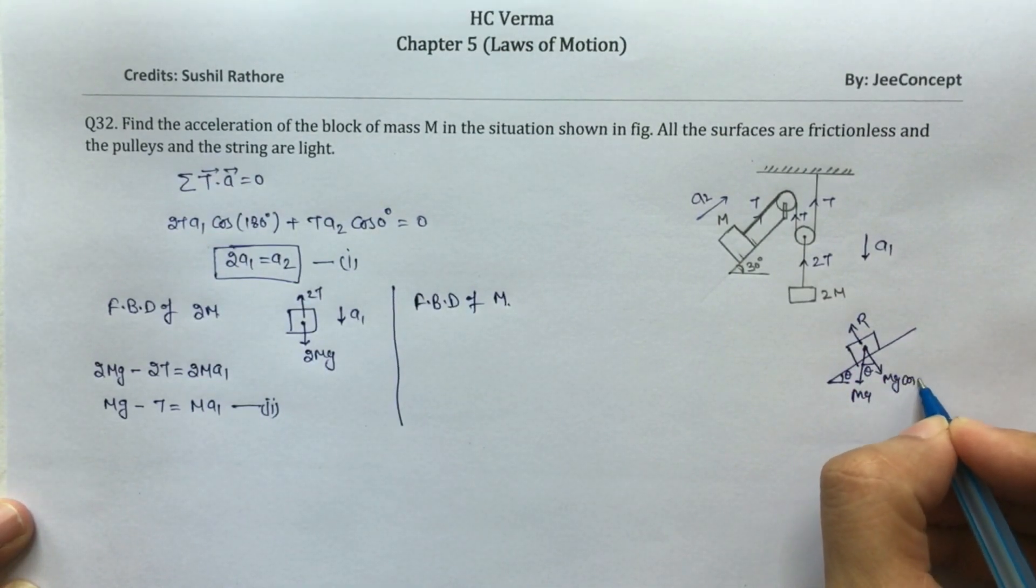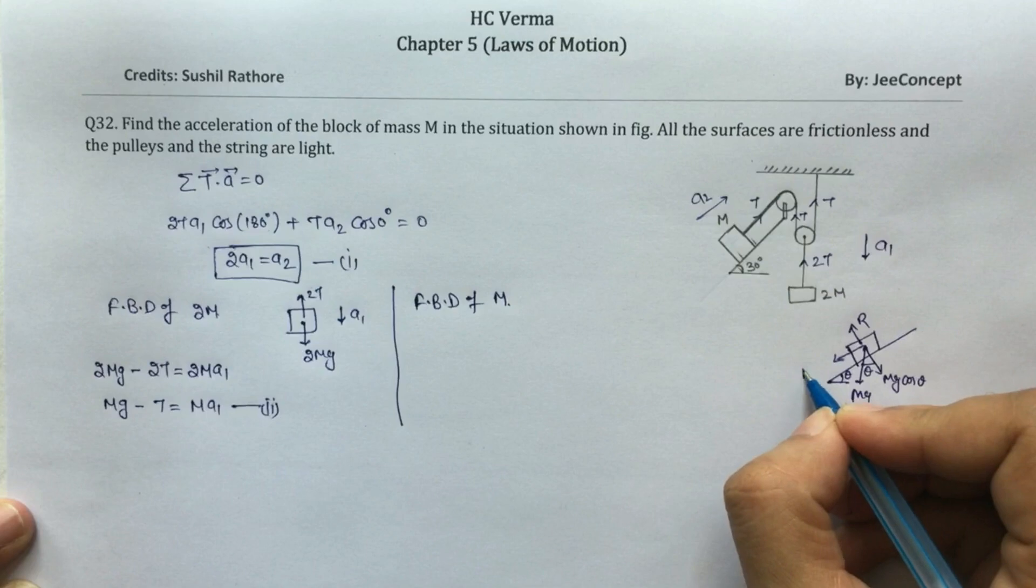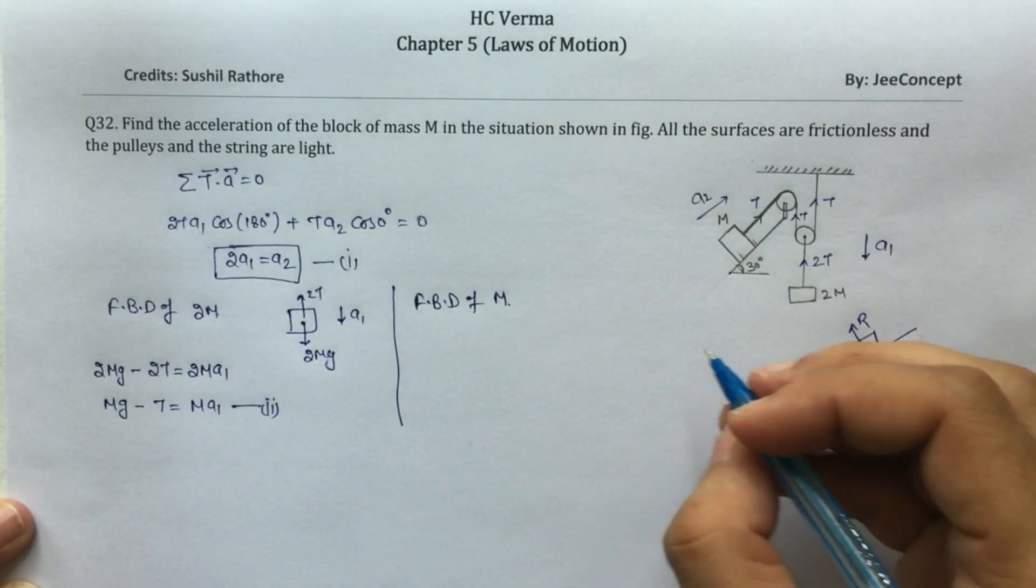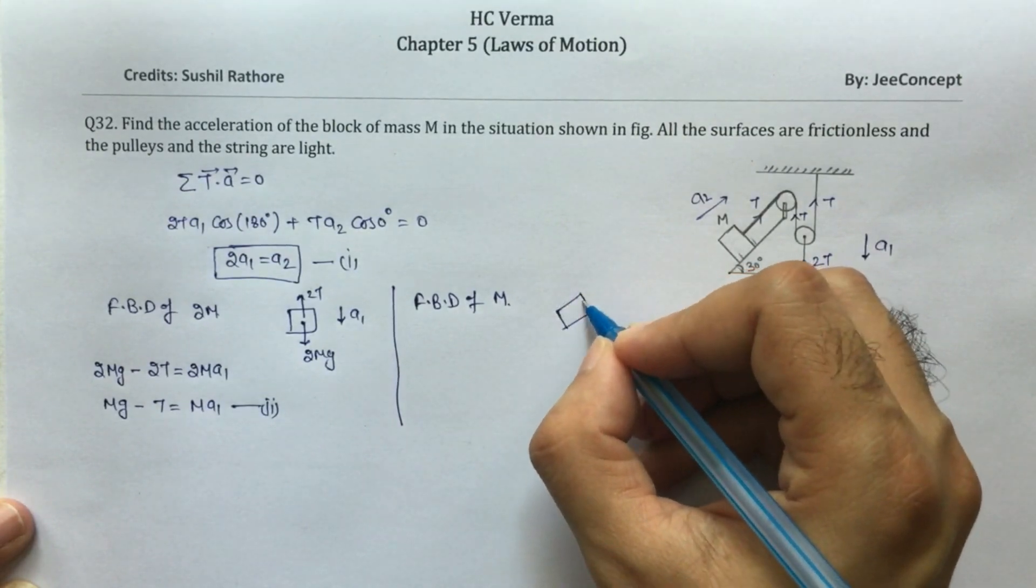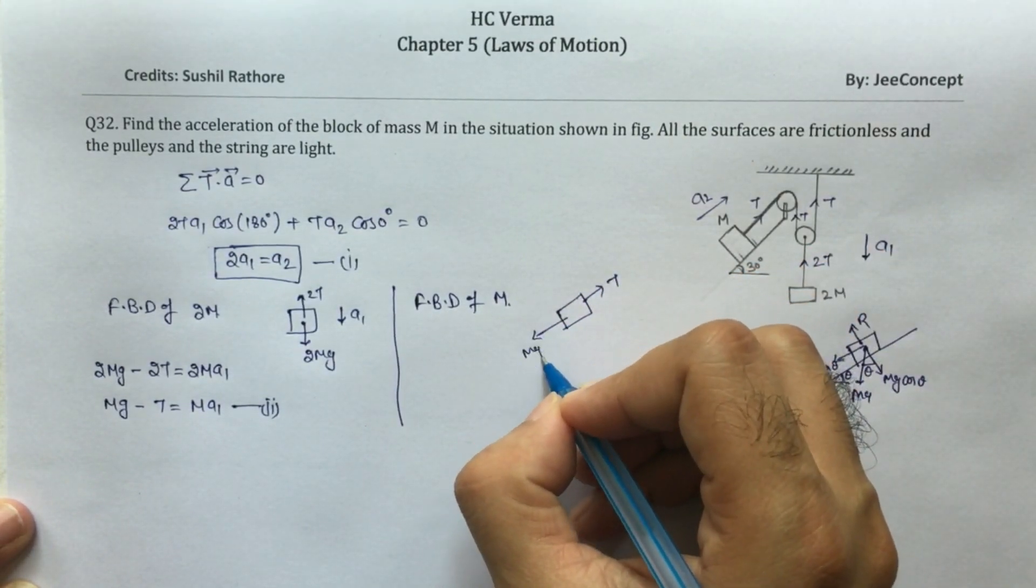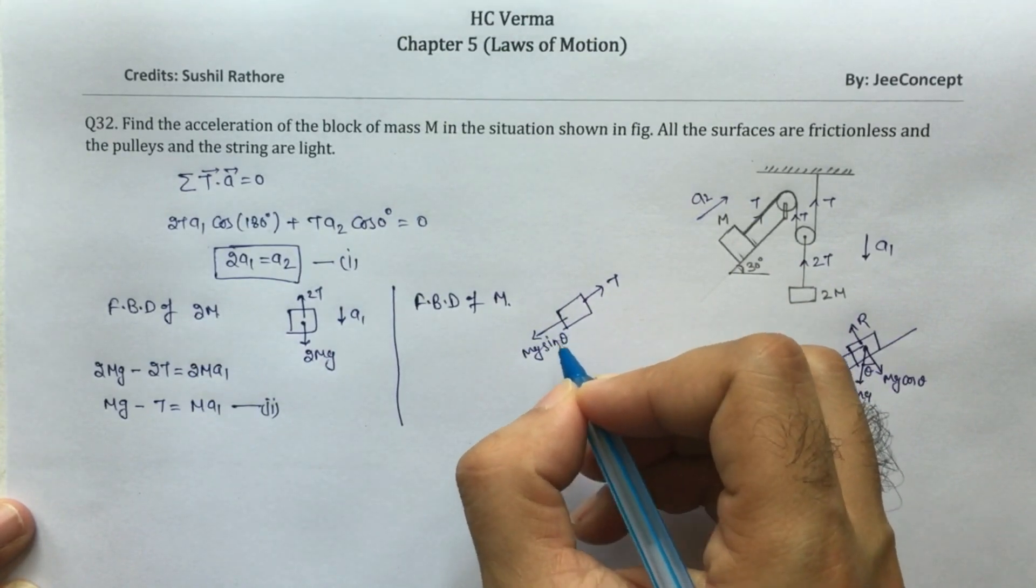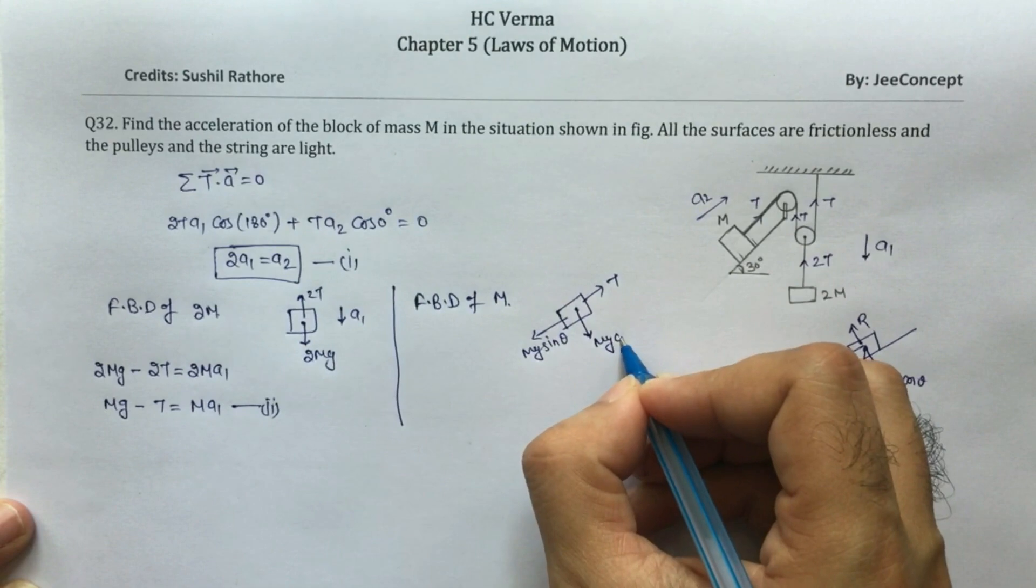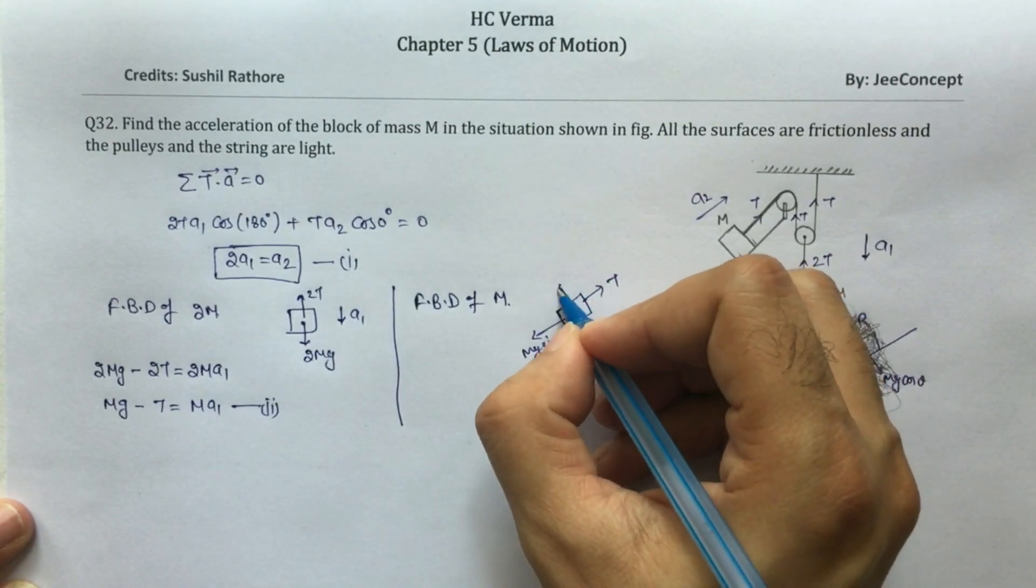So this is mg cos theta and this is mg sin theta. If I see the FBD something like this: T tension upward, mg sin theta is in downward direction, this is mg cos theta and this is the reaction force.